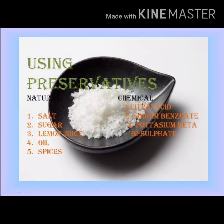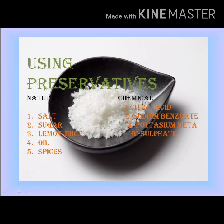Using preservatives — any substance that is added to food to keep it for a long time. There are two types of preservatives. 1. Natural preservatives: salt, sugar, lemon juice, oil, and spices are used as natural preservatives which are available at home; they can be used to preserve pickles, jams, etc. 2. Chemical preservatives: citric acid, sodium benzoate, and potassium metabisulphate are used as preservatives in the food industry.